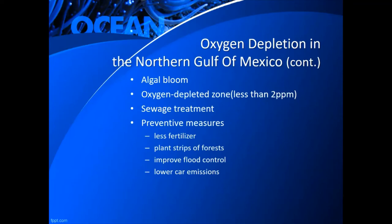You get these oxygen-depleted zones where there's less than two parts per million oxygen available to the fish. There are preventative measures: use less fertilizer, plant strips of forest along the waterways to help absorb chemicals and runoff before they reach waterways, improve flood control so less gets into streams in the first place, and lower car emissions. We put things into the air but the air communicates with water through the water cycle, so you end up putting airborne toxins and pathogens into the waterways.